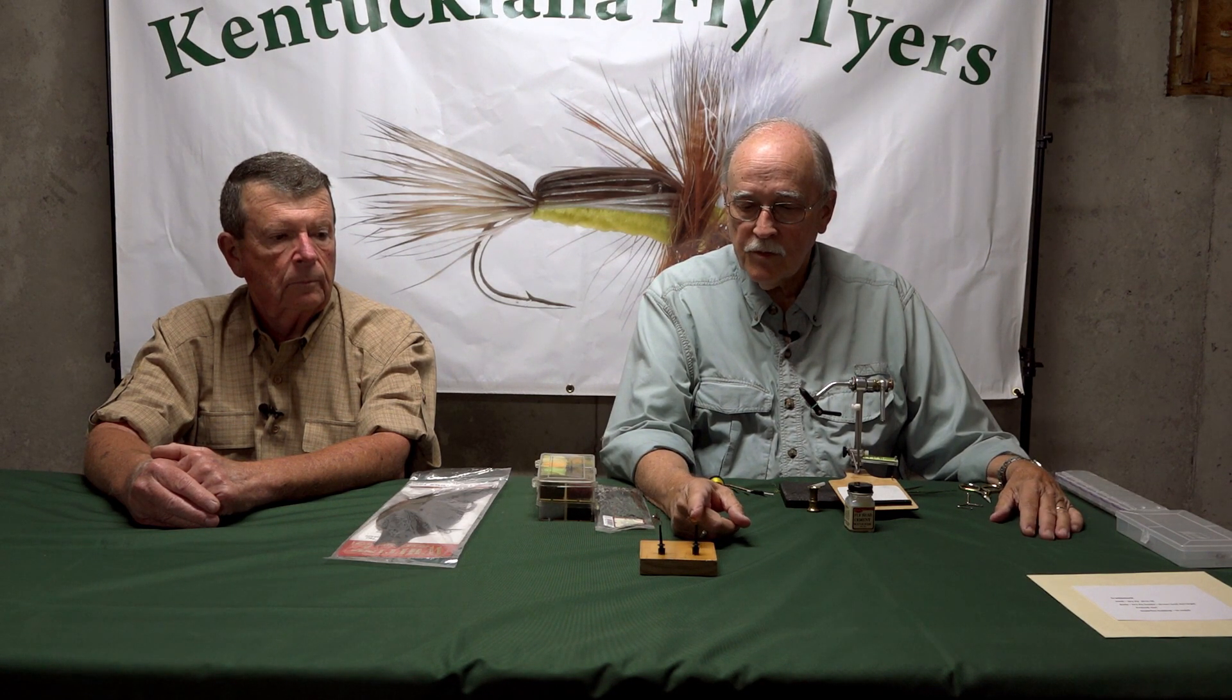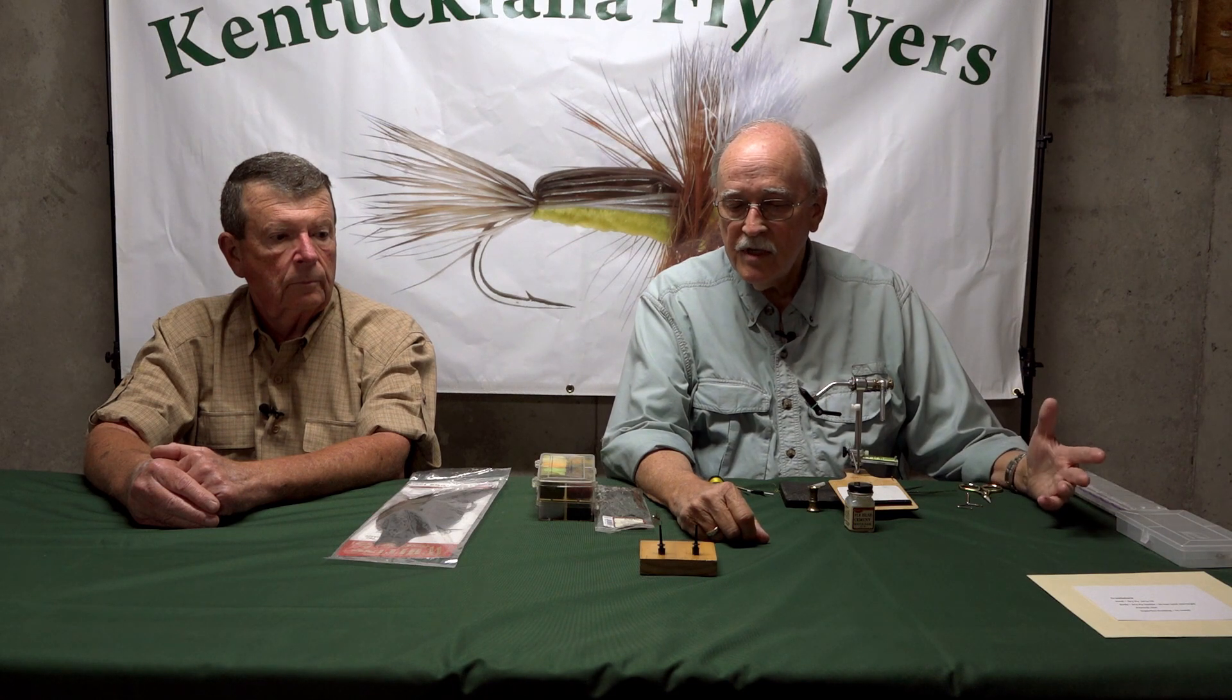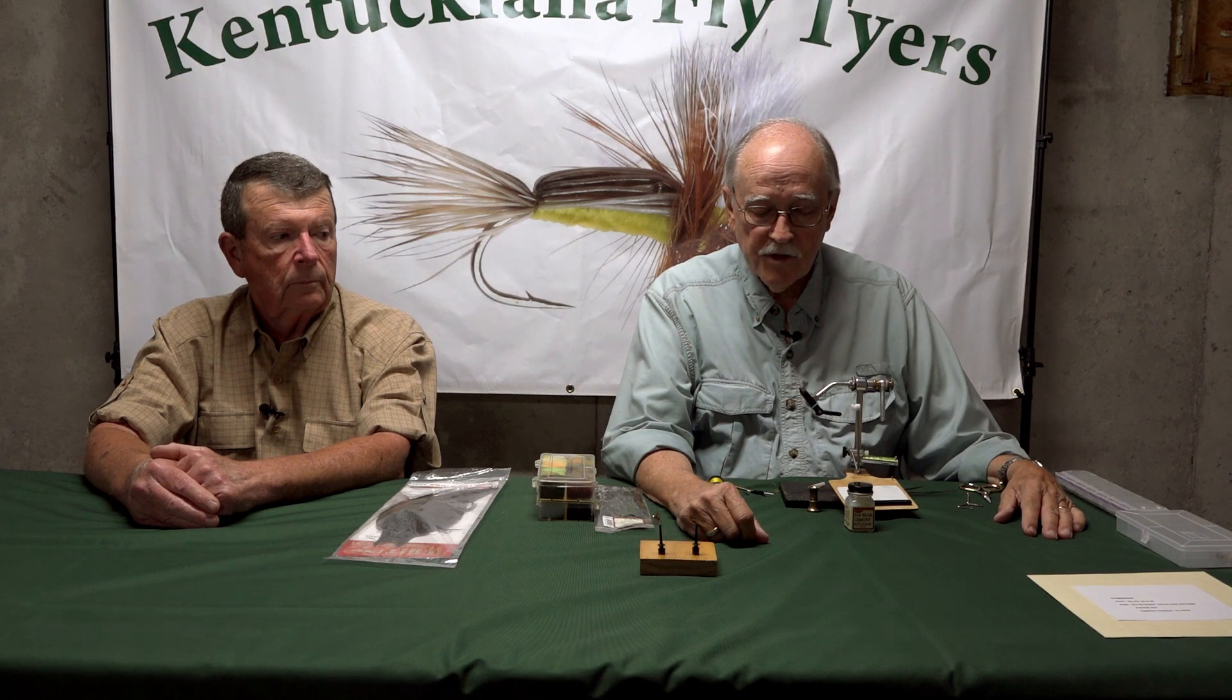It's tied on a dry fly hook. This is a standard dry fly hook. This is a TMC 100, tie on Mustad hooks and every other just standard dry fly. This one's a lightweight hook. It's a down eye. Tie them from size 10s to maybe 16s and 18s. Tonight we're tying it on a size 12 so you can see it more easily.